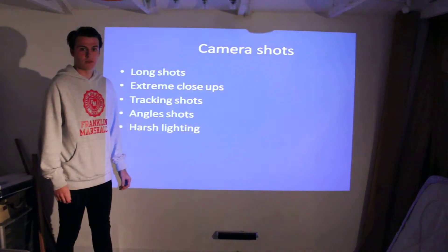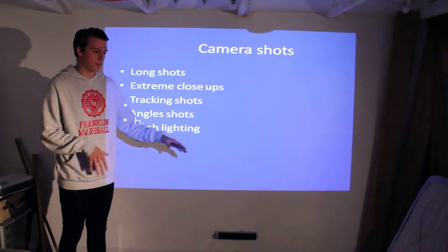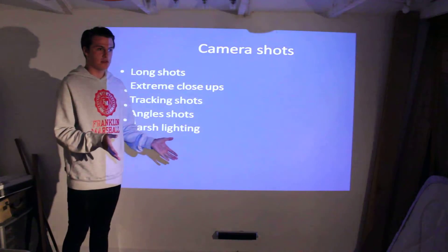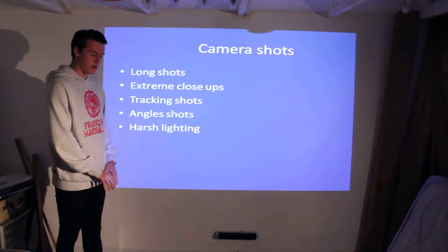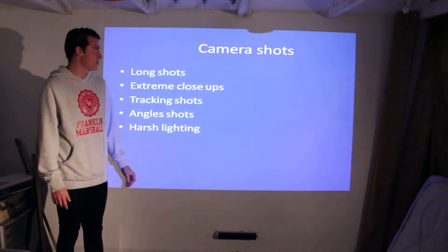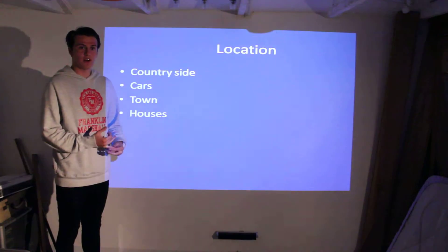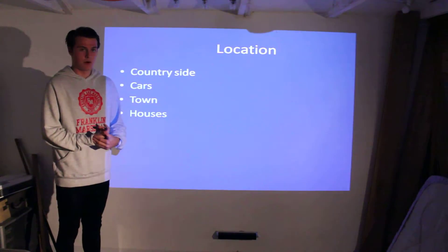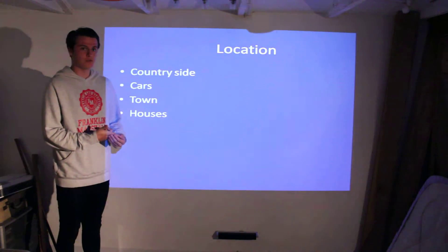We made a dolly track, which we can use to show pans across. When Pierce, the main character, is talking and singing the lyrics, we've got the dolly to go across the track, which James made. We want to try as many different locations as possible — we've got the countryside where we live, the cars that we all drive, and we want a town location as well, which is stereotypical for the genre.